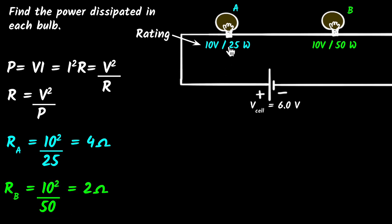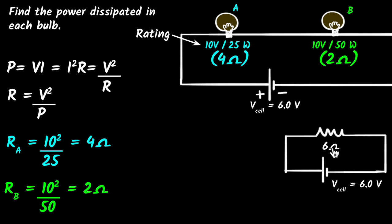Now I know the first bulb is 4 ohms and the second is 2 ohms. These two resistances are connected in series, so the total resistance is 6 ohms. The equivalent circuit has a 6-ohm resistance with a 6-volt battery. Since I can calculate the current using Ohm's law, and that same current flows through both bulbs, I can then calculate the power in each. Pause the video and see if you can try the rest yourself.